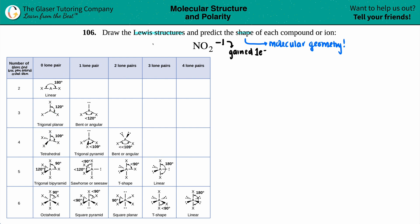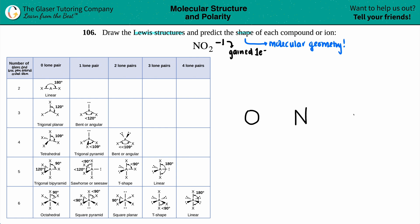You can't get a molecular geometry without drawing the Lewis structure first, so that's what we're going to do right now. When drawing Lewis structures, the least electronegative element always goes in the middle. So between nitrogen and oxygen, nitrogen is a little bit less electronegative than oxygen. So nitrogen is going in the center. We have N, and then two oxygens — one and two.